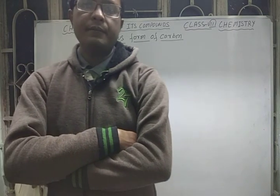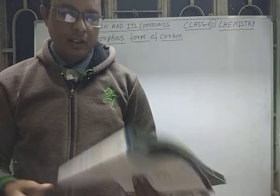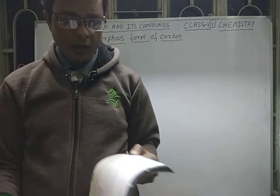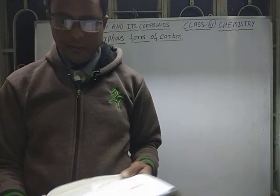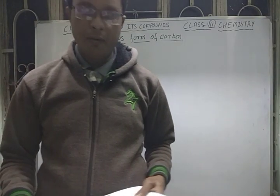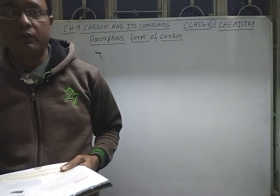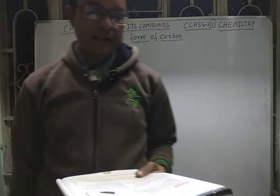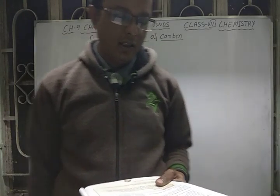Today we will do the amorphous form of carbon. Amorphous form of carbon means the non-crystalline form of carbon. Amorphous means having no definite shapes or forms. Examples include charcoal, coal, lamp black, gas carbon, and coke. We will see each one by one.